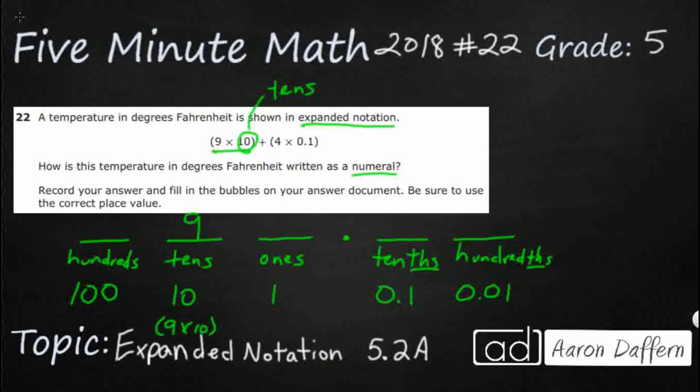We're going to do the same thing right here. So I've got this 0.1, this is the tenths place. So I'm going to put a 4 in the tenths place. So if I wanted to multiply these two, I could say 4 times its value, 0.1. And that's it. That's my expanded notation. I've got 9 times 10 plus 4 times 0.1.